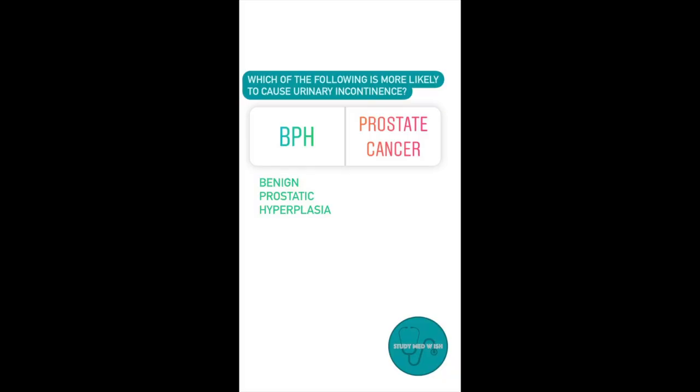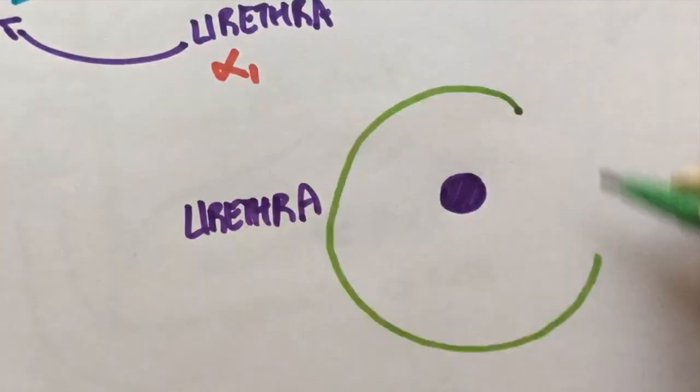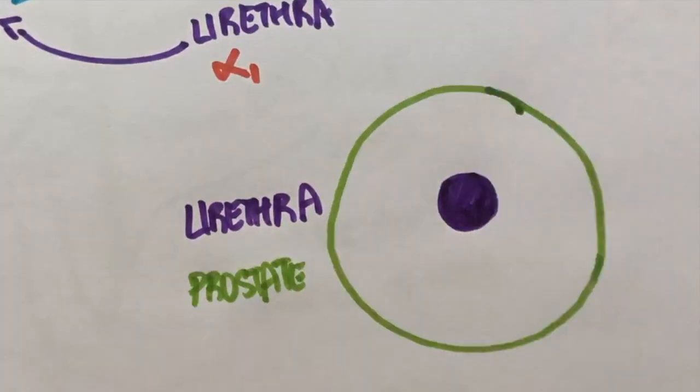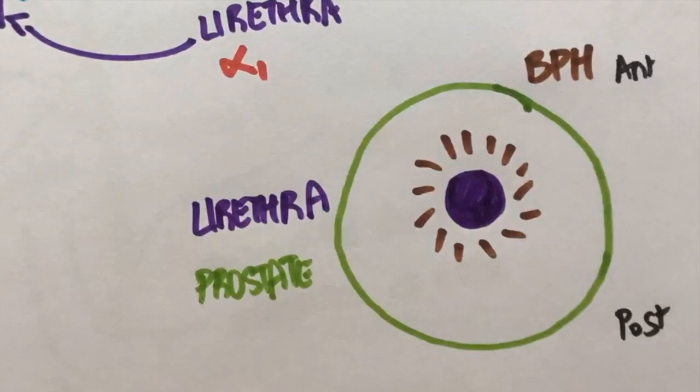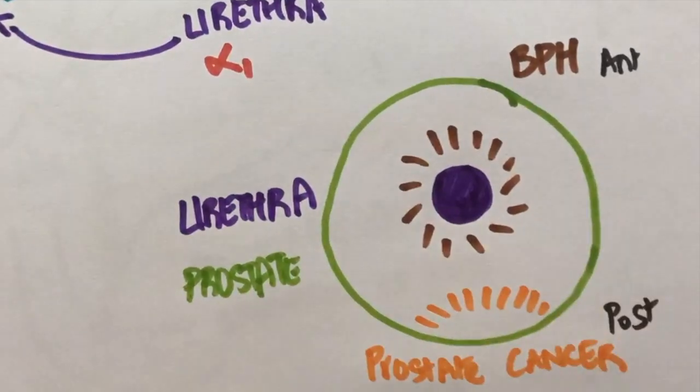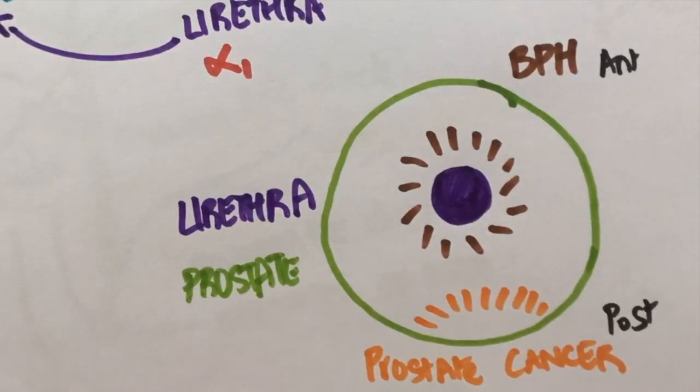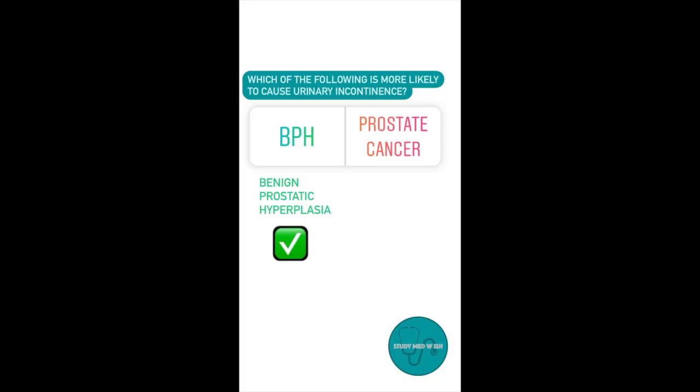Question number seven: Which of the following is more likely to cause urinary incontinence? Benign prostatic hyperplasia or prostate cancer? The answer to this question is benign prostatic hyperplasia. The urethra passes through the middle part of the prostate. BPH involves the central region. Prostate cancer, on the other hand, is likely to involve the posterior region, so it doesn't quite interfere with the urethra. So BPH is more likely to cause urinary incontinence as compared to prostate cancer.